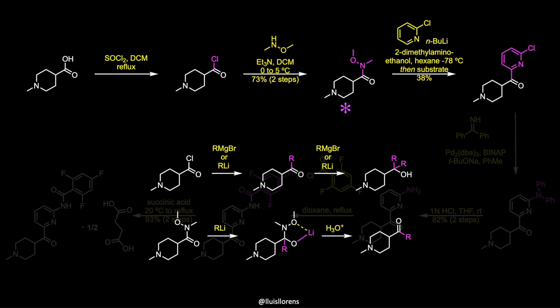The Weinreb amide is also necessary to deliver the desired ketone, since a Grignard reaction on the acid chloride would deliver a tertiary alcohol, because the intermediate ketone is still highly reactive towards the organometallic reagent. In this transformation, however, the partial negative charge on the carbon in the R group attacks the electrophilic carbonyl carbon, pushing electron density onto the oxygen atom. The metal ion chelates then between the carbonyl oxygen and the methoxy oxygen, and since this tetrahedral intermediate doesn't collapse until acidic aqueous workup, no over-addition occurs.